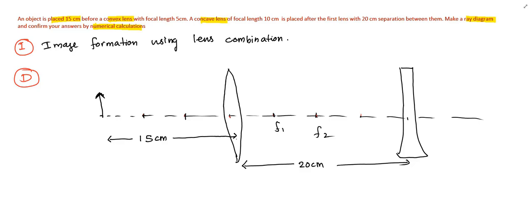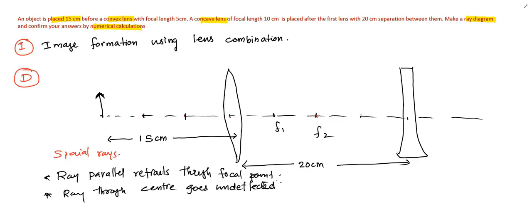To find the image using ray tracing, there are two special rays we take into account. First one is the ray going parallel to the lens axis. Any ray parallel to the lens axis refracts through the focal point. The second special ray is the one going through the center of the lens. This ray will go undeflected.